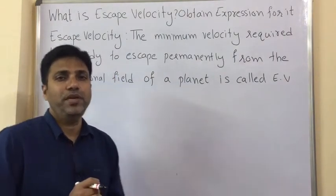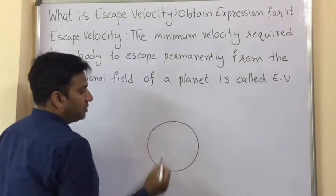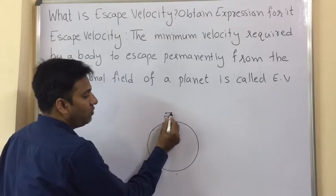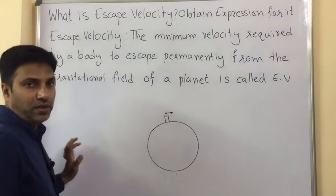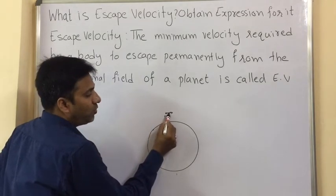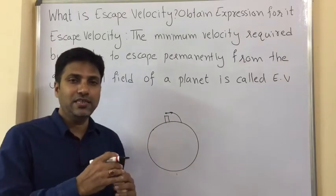Let us understand the meaning of it. Consider this is a planet, for example Earth, and there is a tower. From the top of the tower, an object is thrown with some velocity. The object will move forward and then it will fall like this. Now in the second case, some more velocity is given to it.